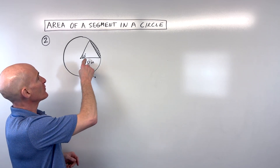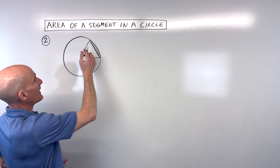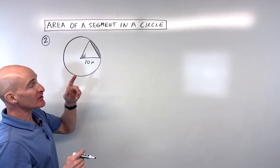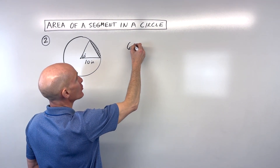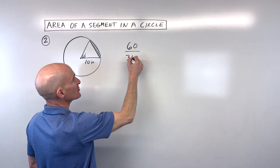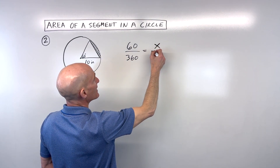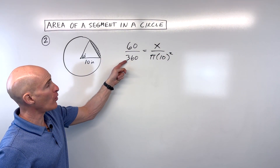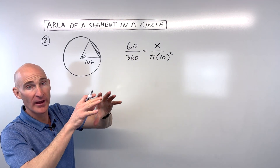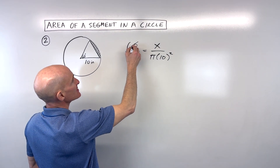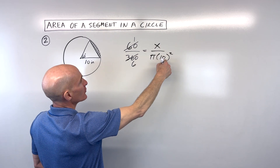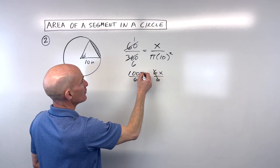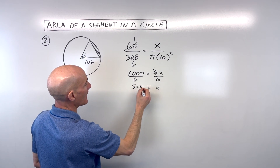Let's take a look at example number two. We've got a central angle of 60 degrees. We're going to find the area of this sector and then subtract off the area of the triangle. For the sector, I'll use a proportion: 60 degrees is to 360 degrees as the area of the sector x is to the area of the whole circle, which is pi r squared, or pi times 10 squared. Reducing — 60 goes into 60 once and into 360 six times — when I cross multiply, I get 100 pi equals 6x. Dividing both sides by 6 and reducing, that gives us 50 pi over 3 as the area of the sector.